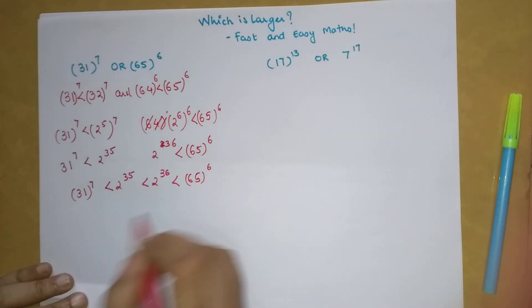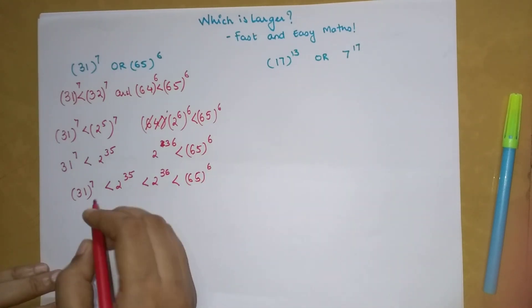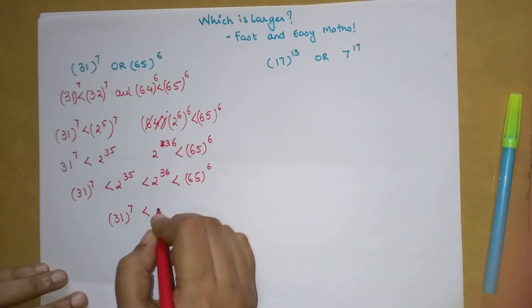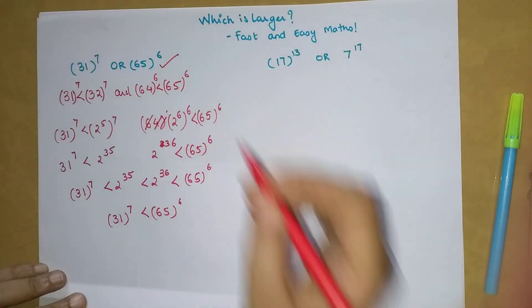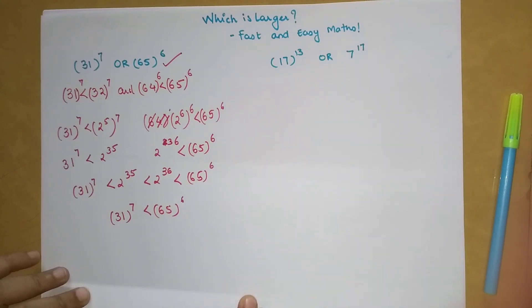From this I can directly say that 31 raised to 7 is the lesser one between the two. So our question is which is greater, so the answer is 65 raised to 6 is greater.